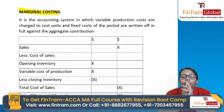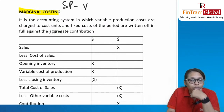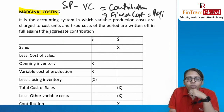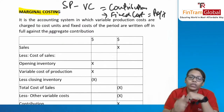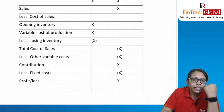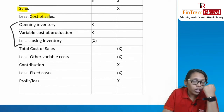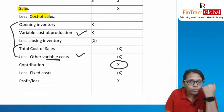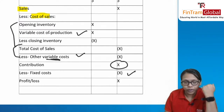Marginal costing is a concept where decisions are made on the basis of contribution. Contribution = selling price − variable cost. From contribution, subtract fixed cost to get profit. In absorption costing, decisions are made on the basis of profit; in marginal costing, on the basis of contribution. The income statement: sales − variable cost of sales (opening inventory + variable cost of production − closing inventory) − other variable costs = contribution; contribution − fixed cost = profit.